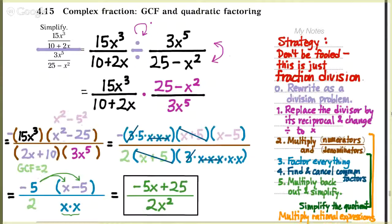Treat it like a division problem by replacing it with a multiplication problem. Take the reciprocal of the second fraction and replace division with multiplication. Then multiply straight across the numerator and straight across the denominator. Factor everything in sight so that you know what you can cancel, do as much canceling as you can, and then multiply everything that survives back out to get your final answer.